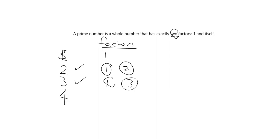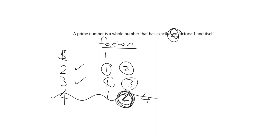What about four? Is it a prime number? One goes in, but also two goes in and then four goes in. It doesn't have exactly two factors — it's got this extra factor — so it is not a prime number. And so we can go on: five is prime, six isn't, seven is, eight isn't, nine isn't. Why isn't nine? Because three can divide into nine, so it has a factor that isn't just one or itself.